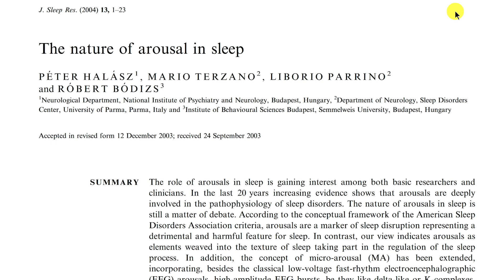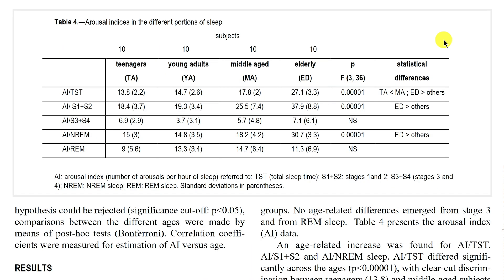What is that number? How many are normal? This is actually well-established in the literature. There's a little variation between studies, but they all fall around similar numbers, and they seem to go up as we age. Here's one such study — the arousal index according to total sleep time, in normal sleepers. For teenagers, it's about 13.8 spontaneous arousals per hour. For young adults, it's 14.7. Middle-aged, about 17.8 — you can see it's gone up quite a bit. And then for the elderly, it's about 27.